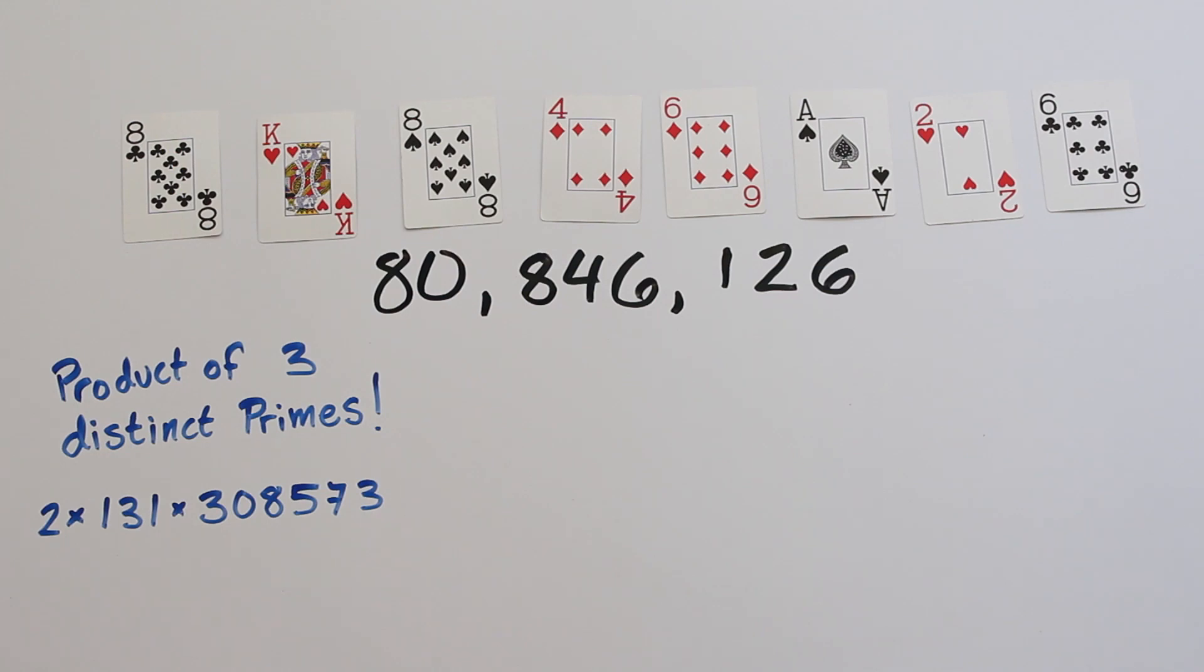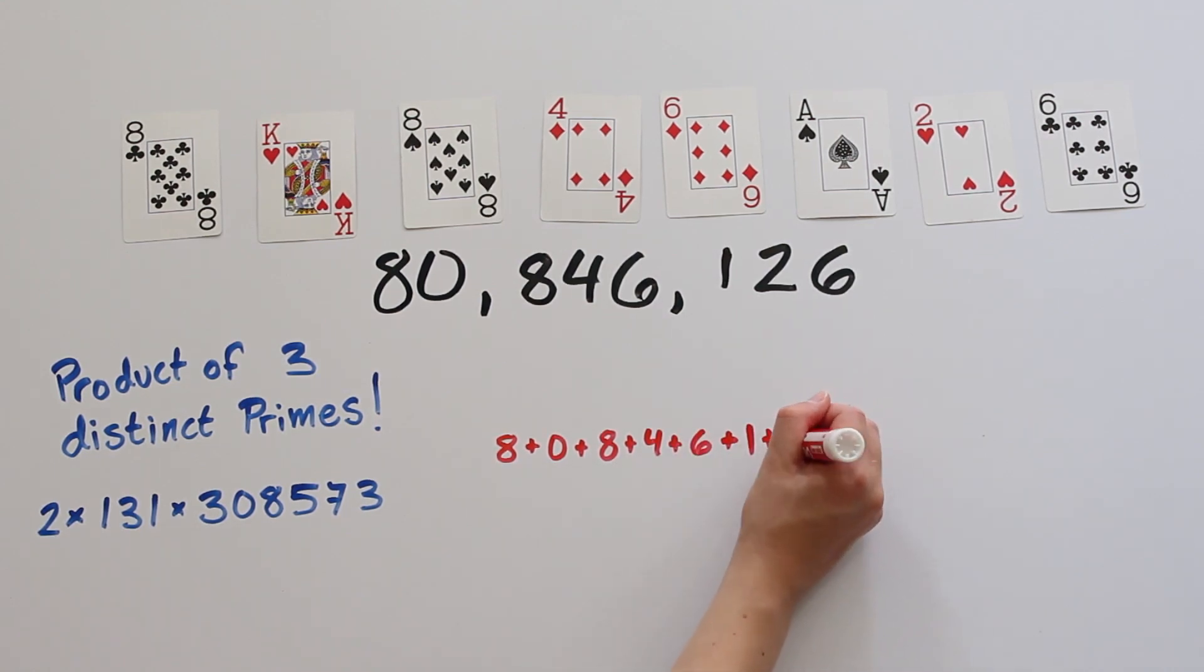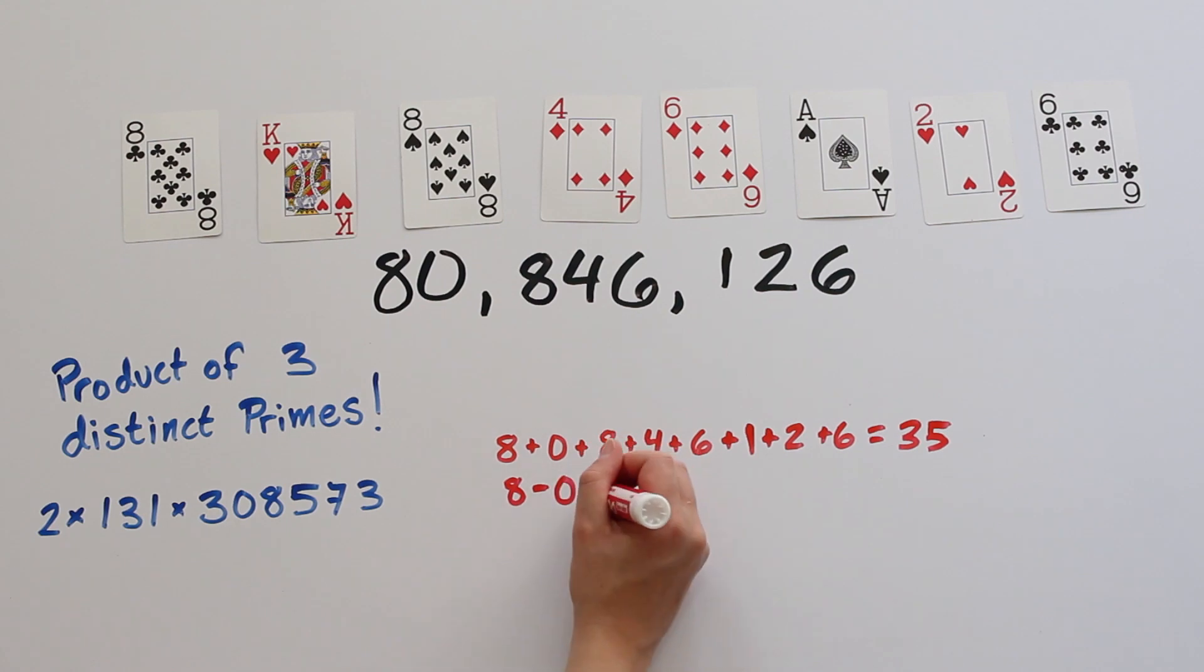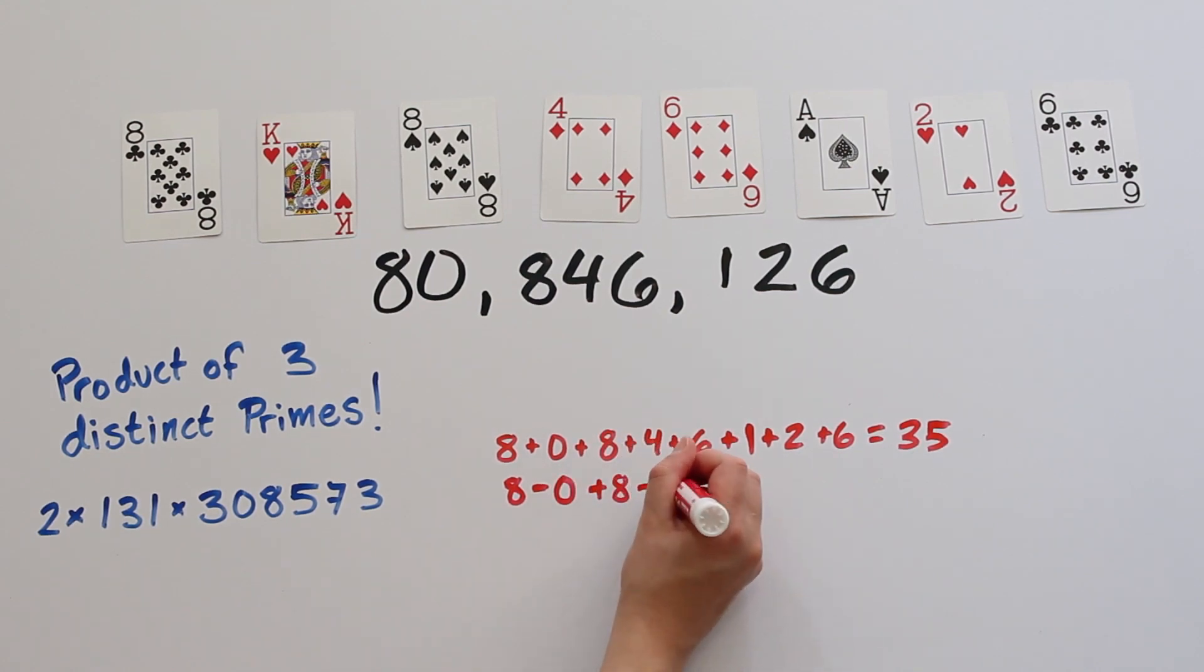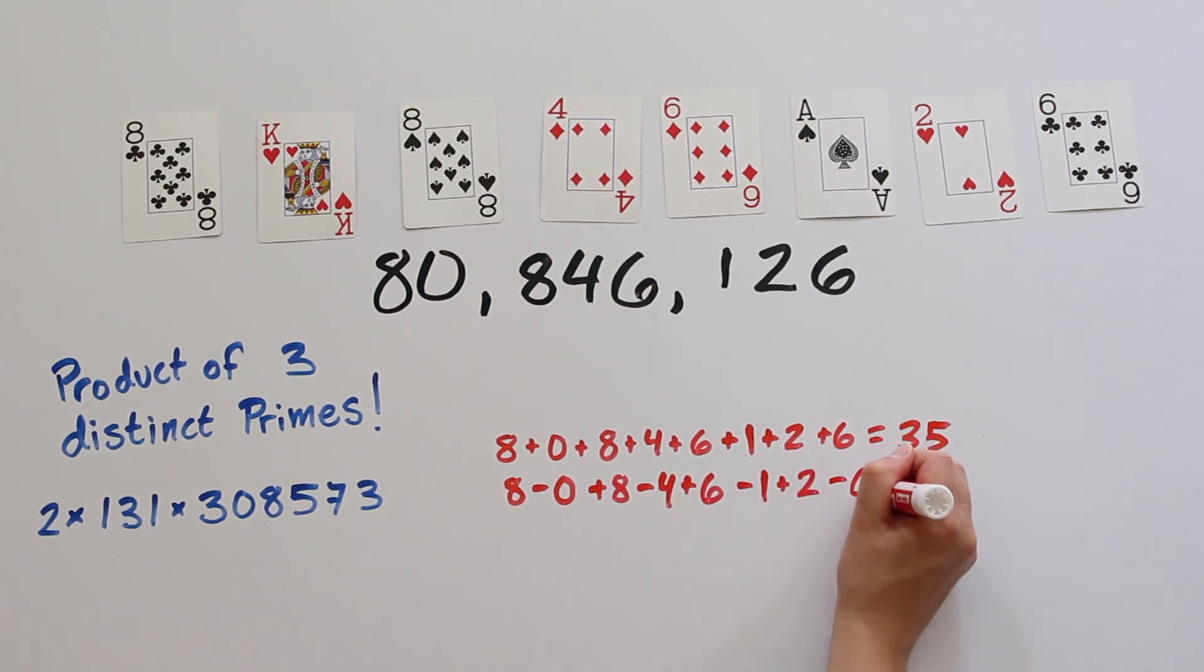So what are some other things that we can do? We could add the digits and look at the sum. That's 8 plus 0 plus 8 plus 4 plus 6 plus 1 plus 2 plus 6. Not super interesting. What about the alternating sum? 8 minus 0 plus 8 minus 4 plus 6 minus 1 plus 2 minus 6. And that's 13. Also not really relevant.